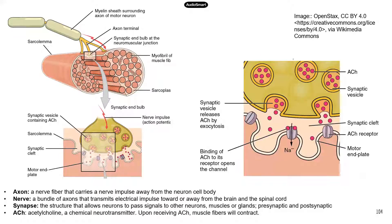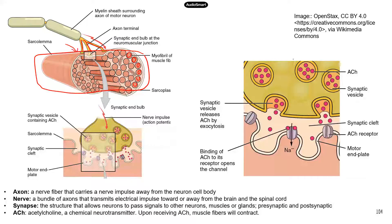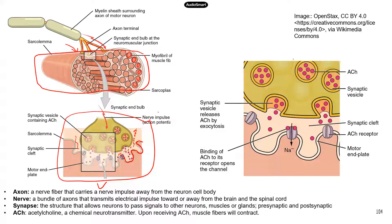Each terminal will reach each muscle fiber and control it. Now we're going to look at the microscopic process happening at the axon terminal and the muscle. You can see these are the axon terminals, and there's this muscle fiber. Within each muscle fiber, you can see all these myofibrils. In this diagram, it looks like the axon terminals are touching the muscle, but they're actually not. There is a little gap right between the axon terminal and the cell membrane of the muscle fiber.